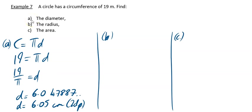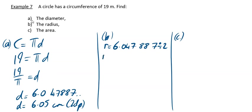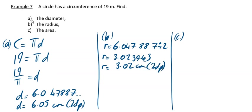The reason I copied down so many decimal places is because to get my radius I don't want to use the rounded version - it might not be accurate enough. So using 6.047887... as the diameter and dividing by 2 gives the radius as 3.023943. Your radius is 3.02 centimeters correct to 2 decimal places.